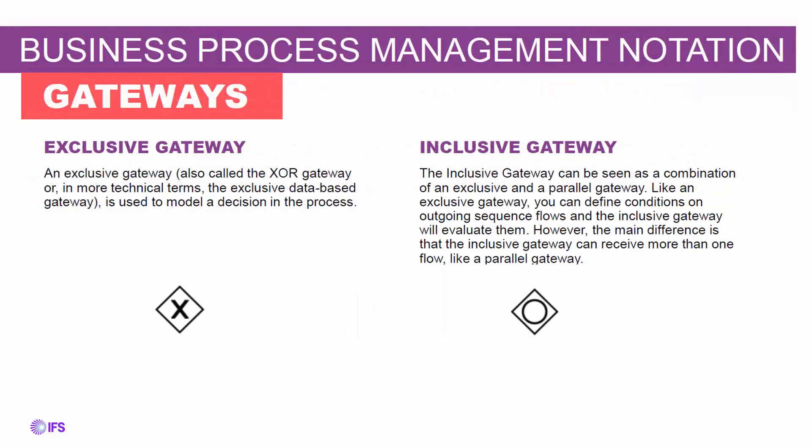Gateways are used to show decisions based on data and specific conditions. There are two types needed in most use cases. The exclusive gateway defines if the data is X, go one way, or if the data is Y, go another — the data can only take one of two paths. The inclusive gateway is similar, however the process could follow two paths, for example when you want more than one action to occur for a stated condition.